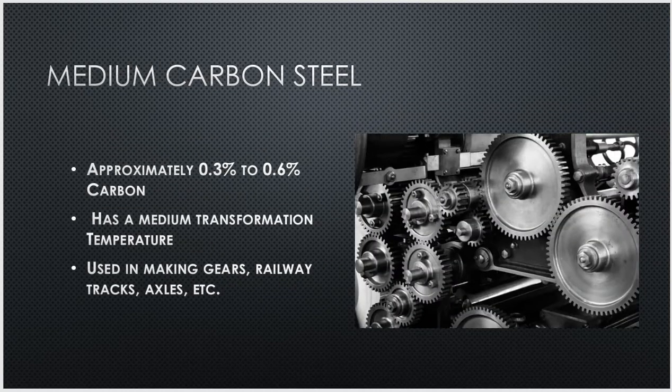Then we have medium carbon steel, which typically has anywhere from 0.3% to 0.6% carbon. This type of steel has a transformation temperature in the medial range. You'll normally find medium carbon steel used in things like making railway tracks that trains run on, driveshafts, gears, and things of that nature.